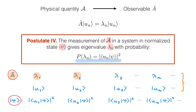Rather than telling us the precise outcome of a measurement, it tells us the probability associated with any given outcome. Because of this postulate, in quantum mechanics it is impossible to know the exact outcome of any given measurement before you actually make the measurement. All we can predict is the probability of getting a particular outcome.